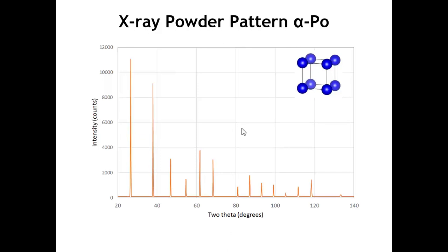What does an x-ray powder diffraction pattern look like? Here is the x-ray powder diffraction pattern for alpha polonium, which has a simple cubic structure. This is practically the simplest crystal structure you can think of — we have a primitive cubic Bravais lattice with one atom at each lattice point. And this is what the x-ray powder diffraction pattern for this material would look like.